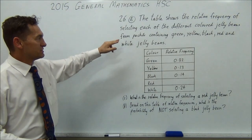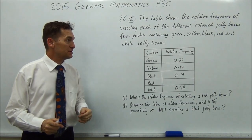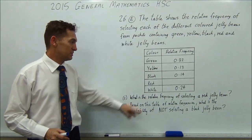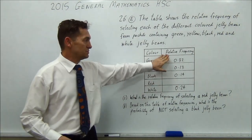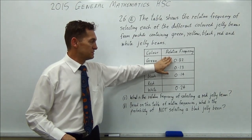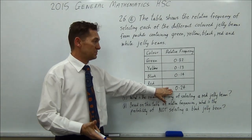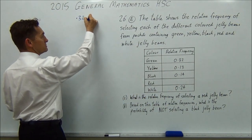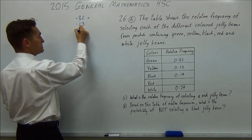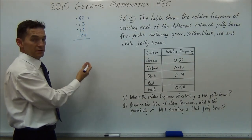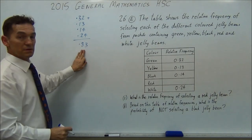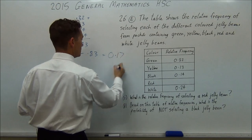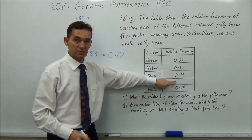26C. The table shows the relative frequency of selecting each of the different coloured jelly beans, from packets containing green, yellow, black, red and white. Now they leave red blank. What is the relative frequency of selecting a red jelly bean, which is the one they're missing? So this should be pretty straightforward. You should know that if you've got frequencies, or relative frequencies, that these should add up to 1, because that means you're guaranteed. So you're guaranteed to pick one of them, so these have to add up to 1. So if you add up these, so you just go 0.32, plus 0.13, plus 0.14, plus 0.24 on your calculator, you get 0.83. Alright? So all you've got to do, one take away that, and you're done. 1 minus 0.83 equals 0.17. So the relative frequency of a red one is 0.17. Pretty straightforward.